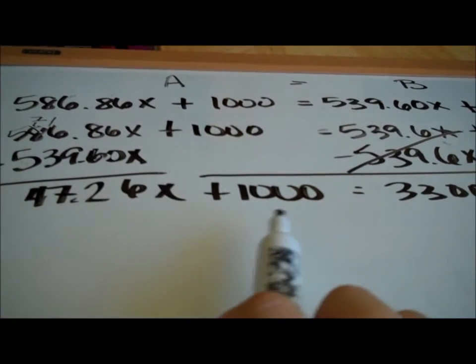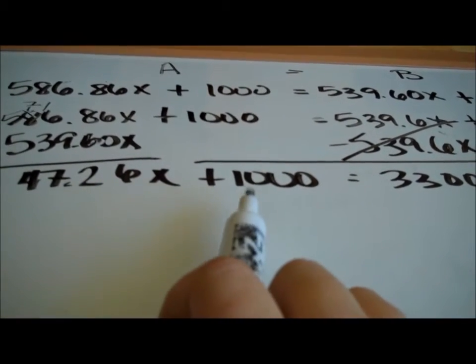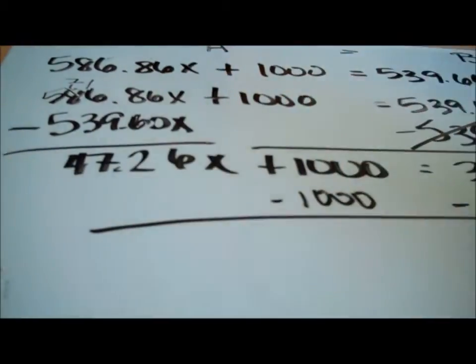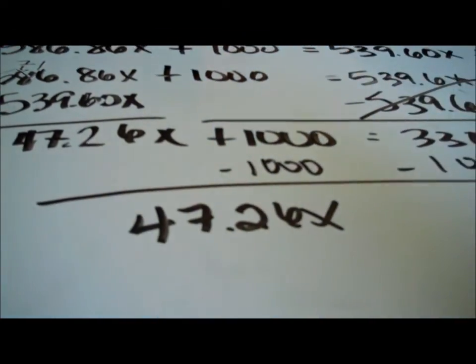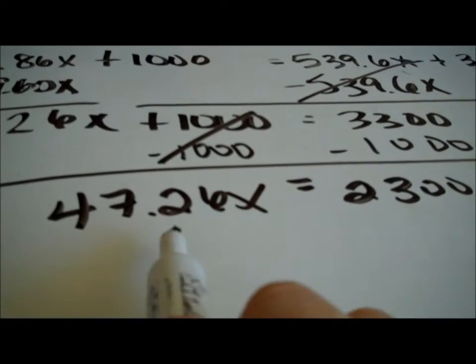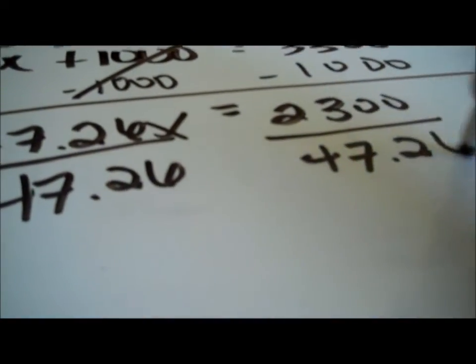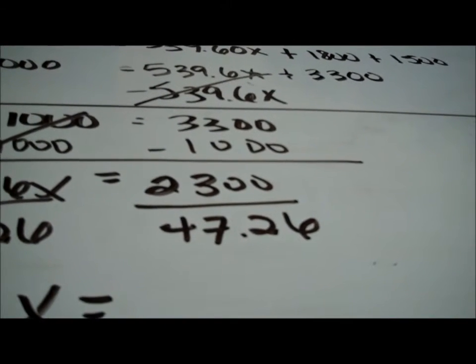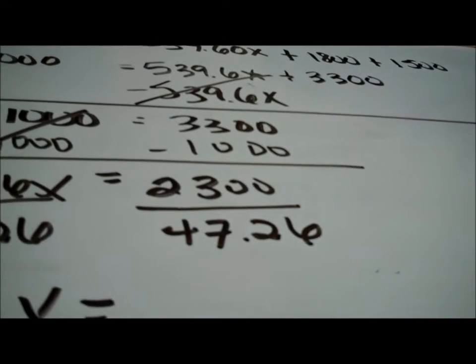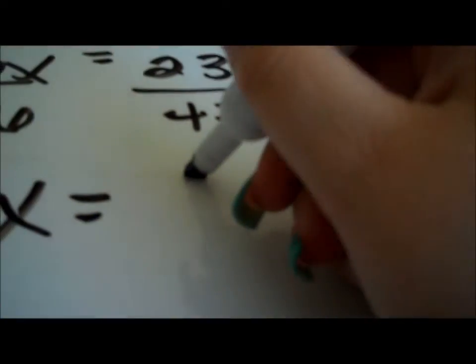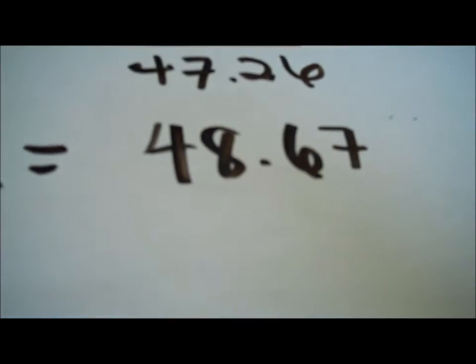I need to move the 1000 first — addition was happening first, multiplication second — so subtract 1000 from both sides. I'm left with 47.26x = 2300 on the right hand side. To get x away from the 47.26 there's multiplication going on, so the opposite is division. Dividing both sides by 47.26 gives me approximately 48.67.